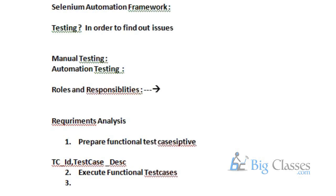Once you understand the requirement functionality, you start writing the test cases up to expected result — you don't write the actual result yet. Whenever you prepare the test cases, you document only the expected result. Once you get the release from the development team, you execute the test cases. While executing the test cases, you get some result — that is known as the actual result. What you derive from understanding the requirement is known as the expected result.